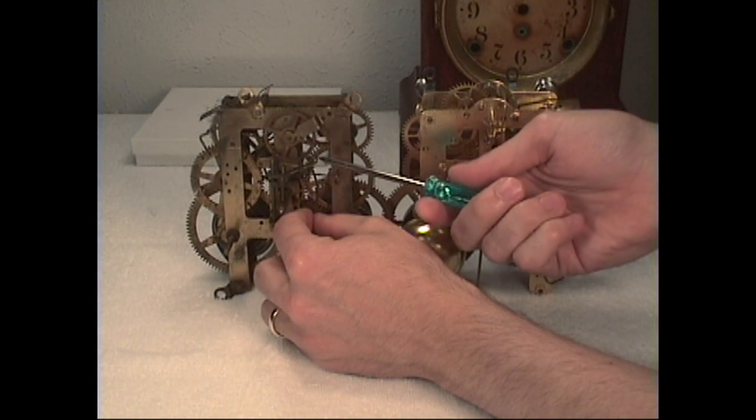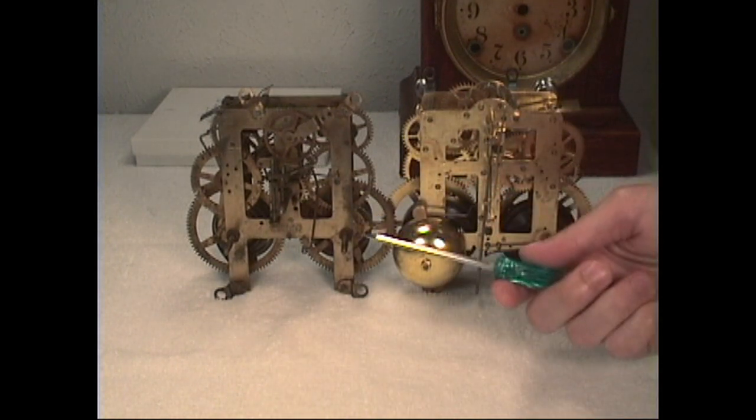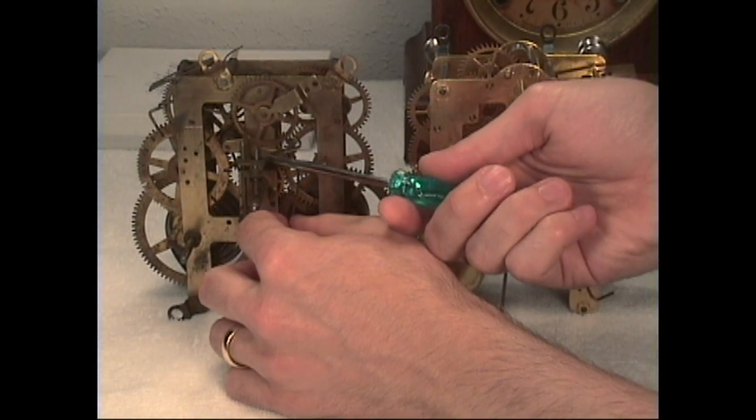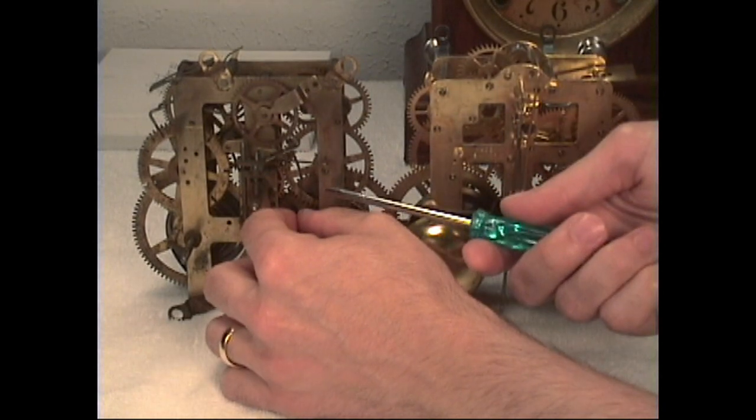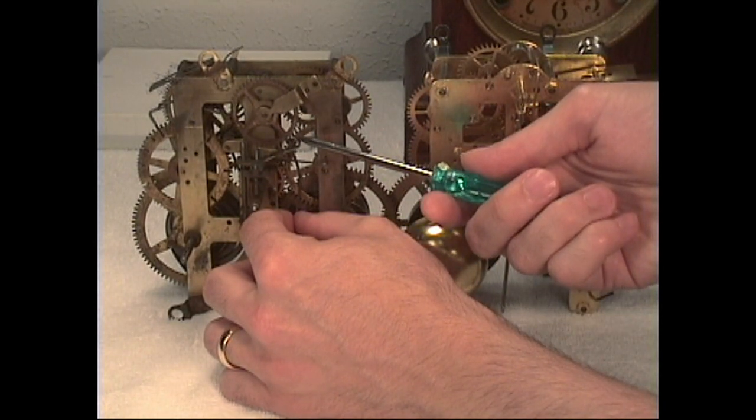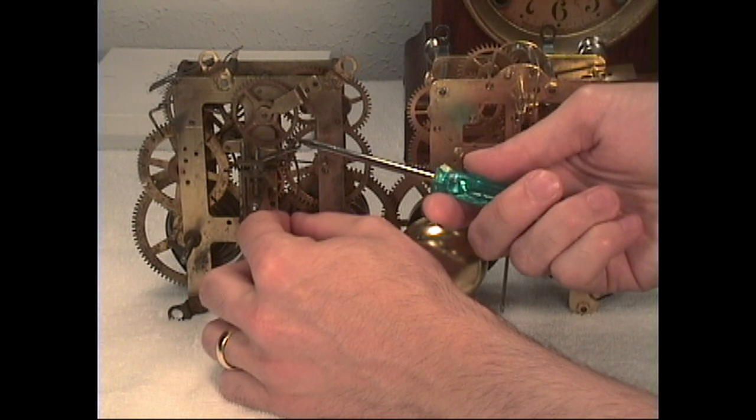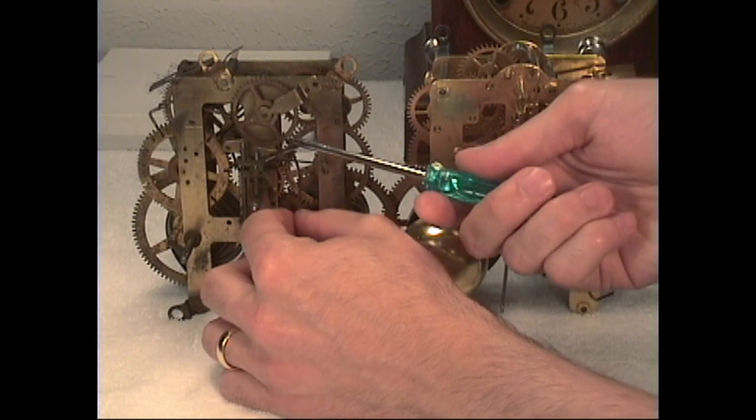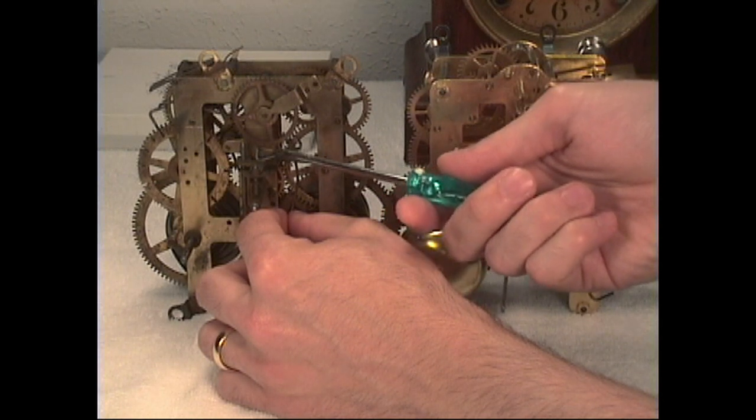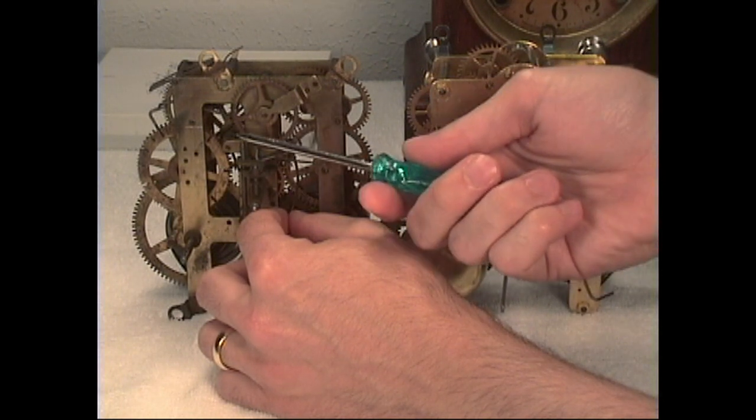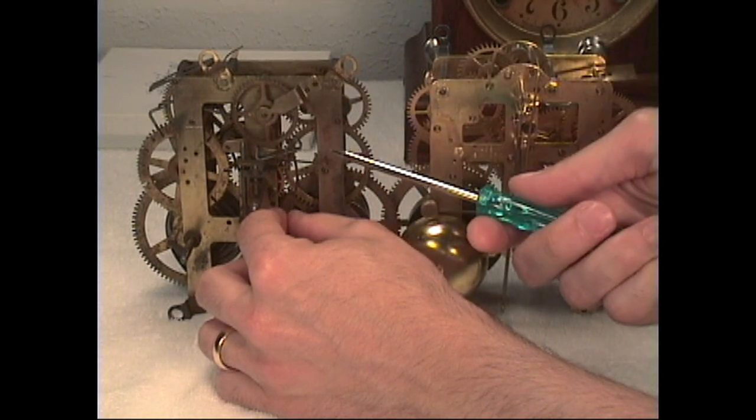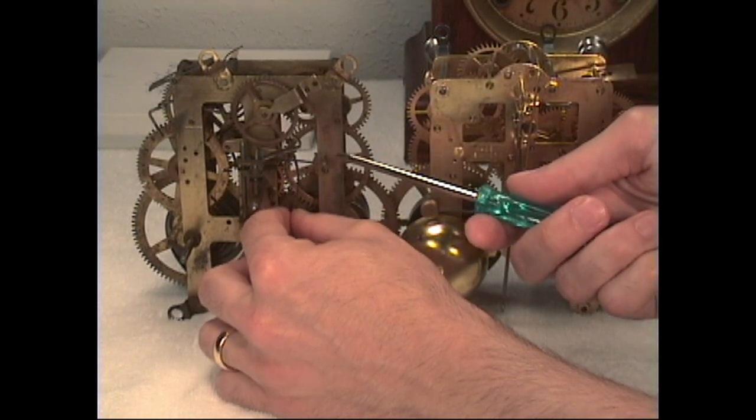Here we have the entry pallet on this side and I'll zoom up just a little bit closer. We have the exit pallet on this side. Typically when we oil, we put oil on the entry pallet here which collects on the teeth and by the time it gets to the other side it deposits it on the exit pallet. So that way as you oil here you're oiling the entire escape wheel for the escapement.